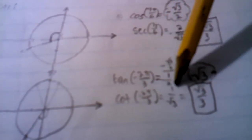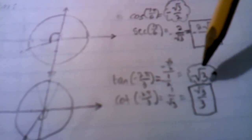The cotangent of that is 1 over √3, because you just flip it. And once you simplify it, it's √3 over 3.